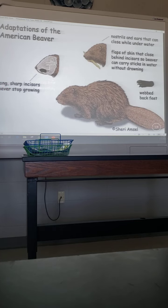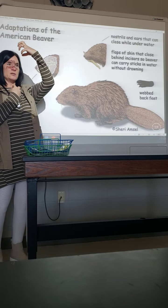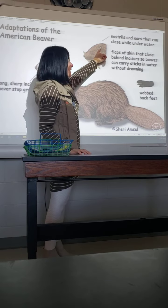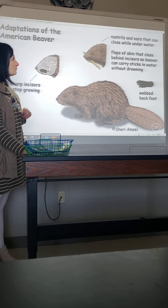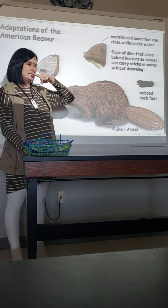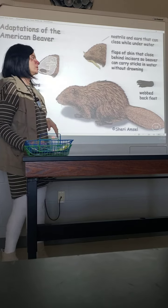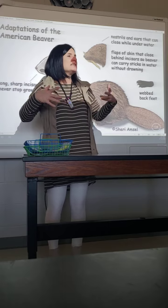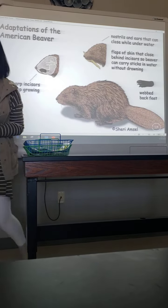Here are some specific adaptation examples with beavers. They have really long incisors that never stop growing — that's why they're always chewing, otherwise their teeth would grow into their head. They have nostrils and ears that can close with little flaps so water doesn't get in. They also have a flap at the back of their throat so they can carry a stick in their mouth without gagging and choking. Their big flat tail is used to make scary, intimidating slapping noises to seem more threatening than they really are.